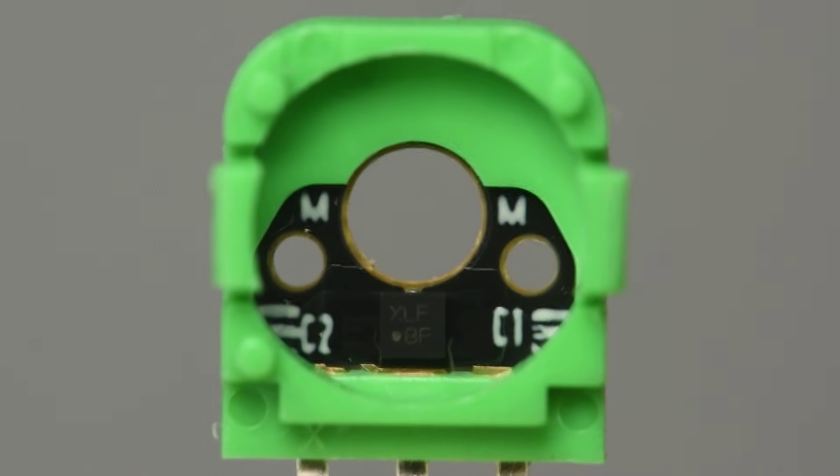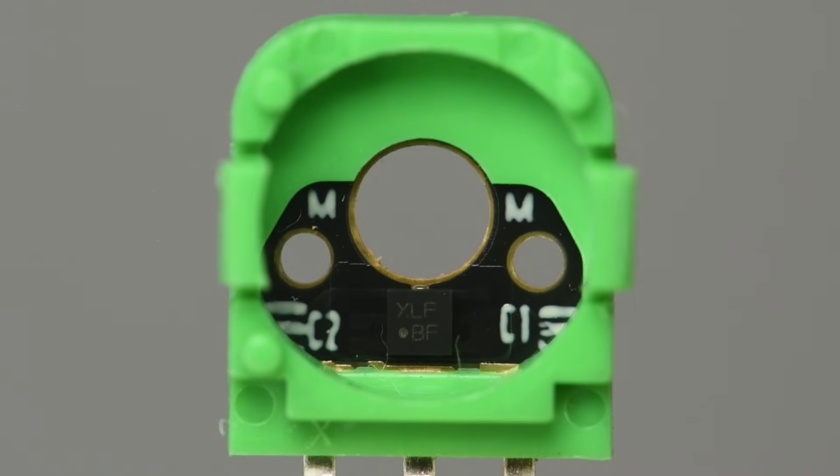Here is the inside of the sensor. The TMR IC is at the bottom near the leads. Looks like it is marked XLF on the top line and BF on the bottom. PCB has screenings for C1 and C2 though I don't see any parts. Maybe they are on the bottom side of the board.